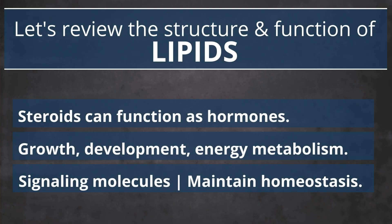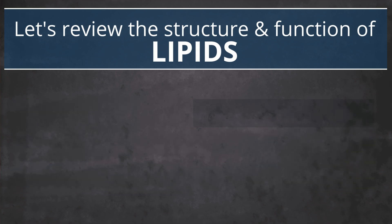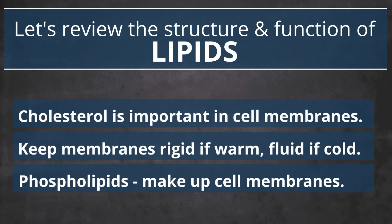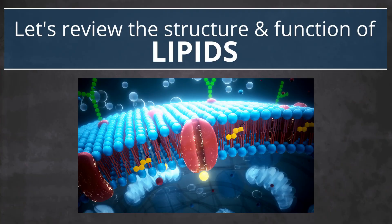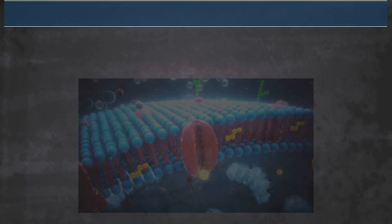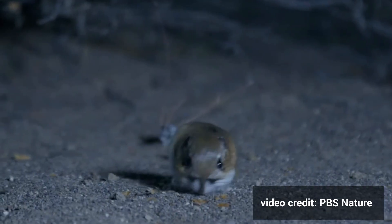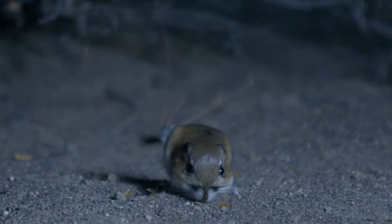Steroids are hormones that support growth, development, energy metabolism, and homeostasis. Cholesterol helps provide stability to animal cell membranes, while phospholipids are the main component of the cell and plasma membranes. The cell membrane plays an important role in homeostasis by regulating what can enter and leave cells. Many critical life processes which allow rock pocket mice and kangaroo rats to survive in the harsh desert climate depend on lipids.